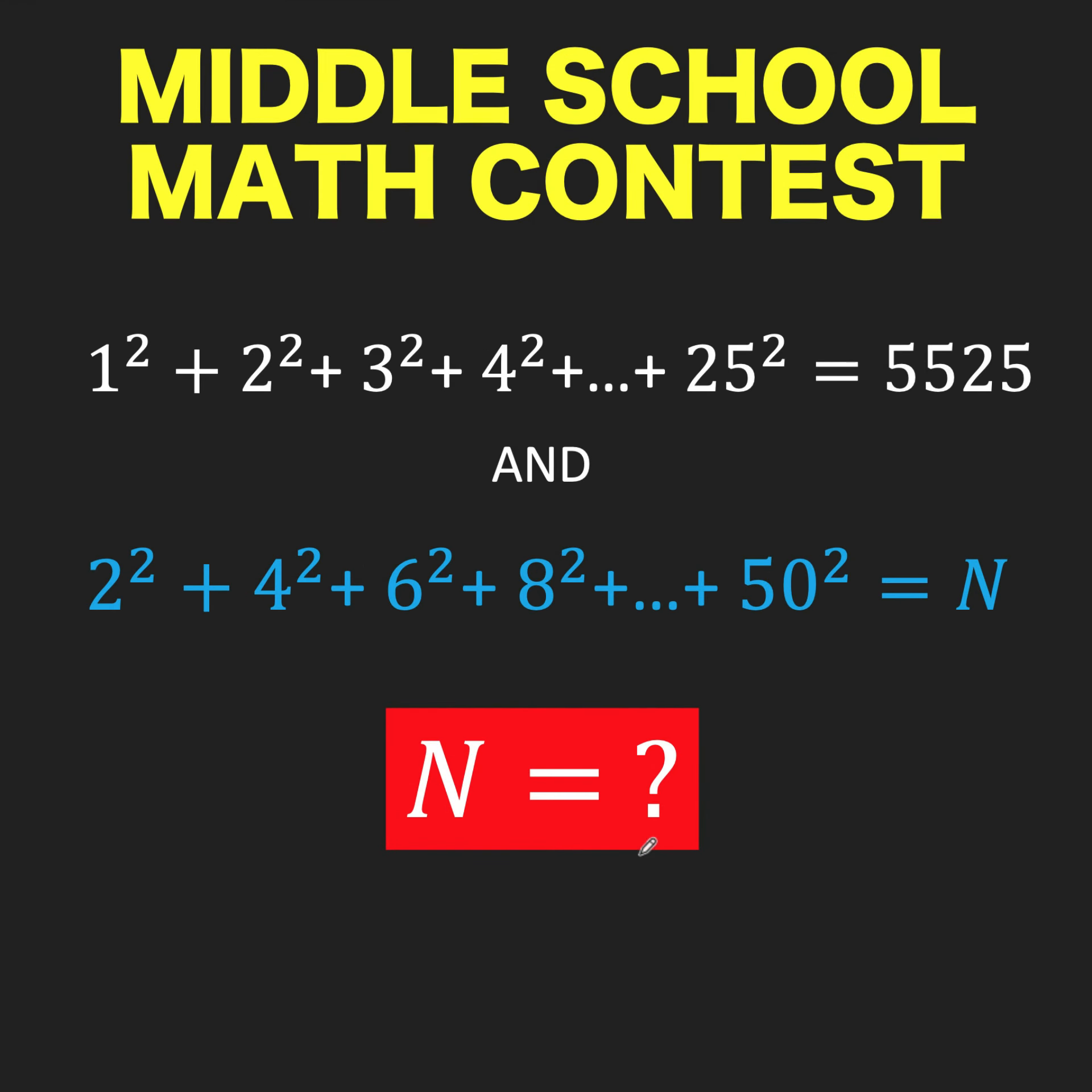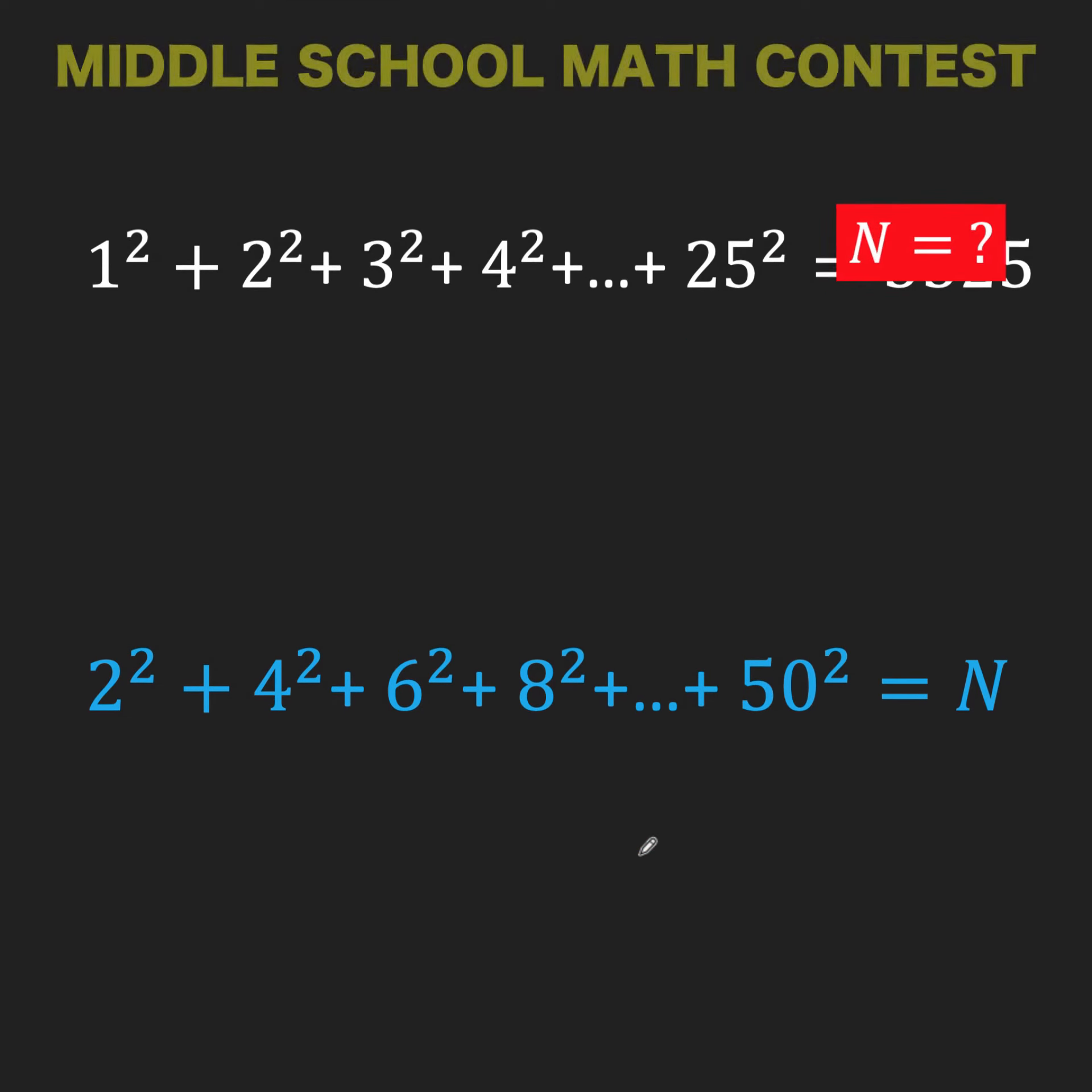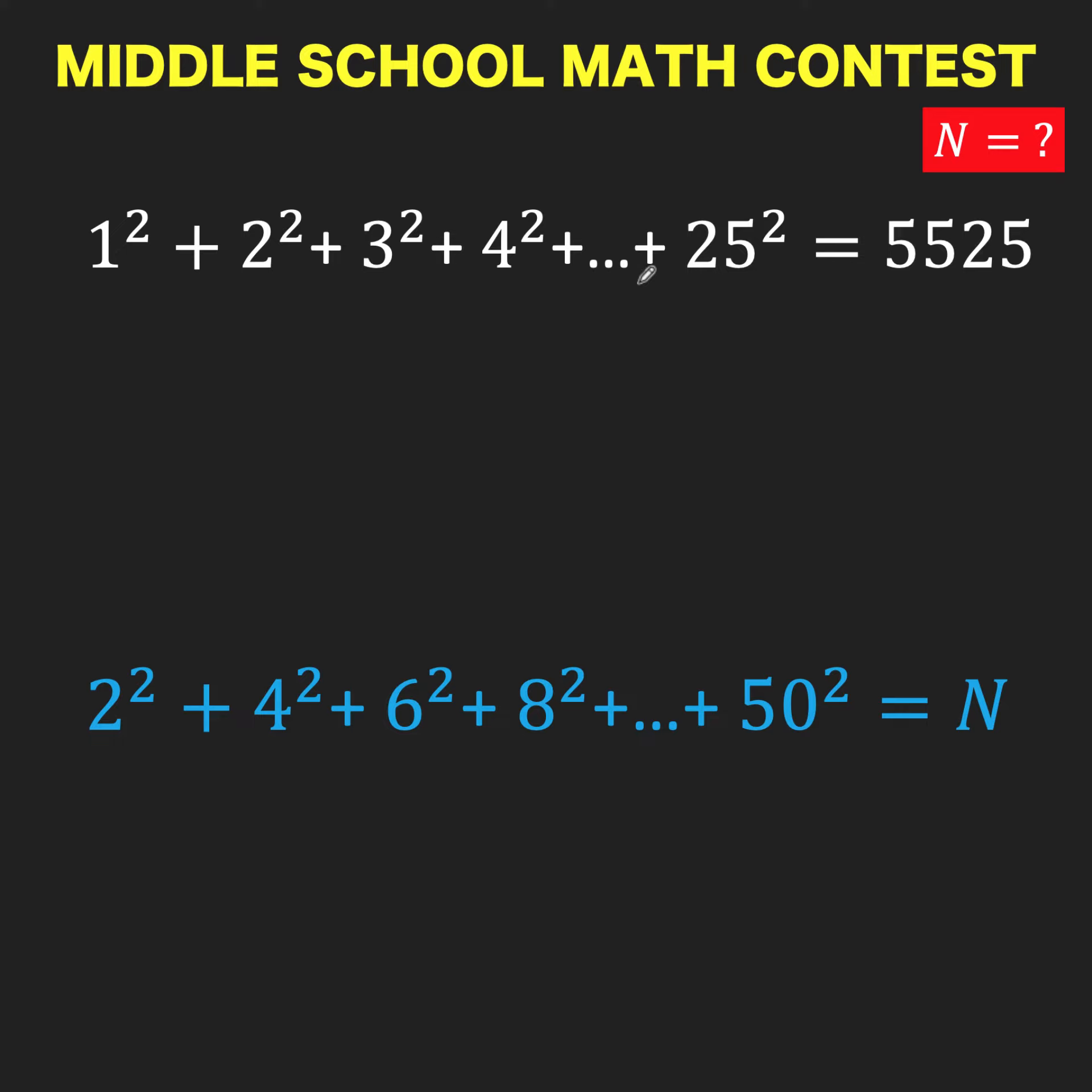Now let's solve this problem together. When dealing with problems with missing terms, in this case we do not know what those terms are after 4 squared, and we jump to 25 squared. The same thing here, we have these three dots. When that happens, this problem is usually testing your ability to see patterns. So let's look for the pattern here.